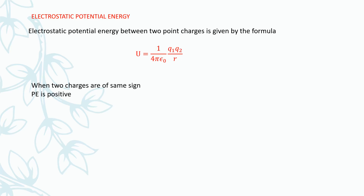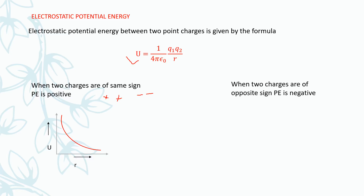When two charges are of the same sign — either both positive or both negative — the potential energy is positive. So when we plot a graph between U and r, it will come out to be positive. When two charges are of opposite sign, one positive and the other negative, the potential energy will come out to be negative. When we plot a graph between U and r, U is taken along the negative y-axis because potential energy is negative, so the graph will come out like this.